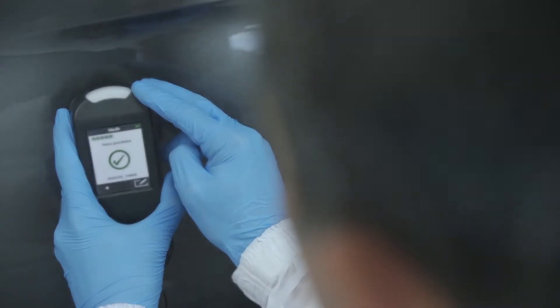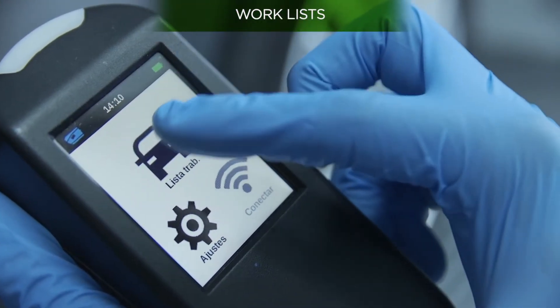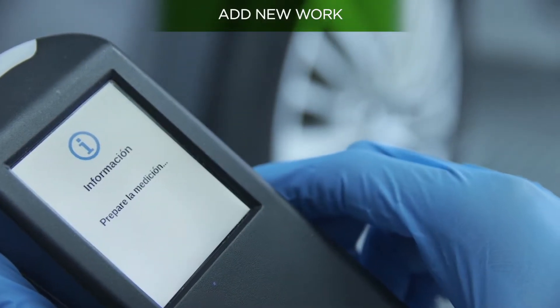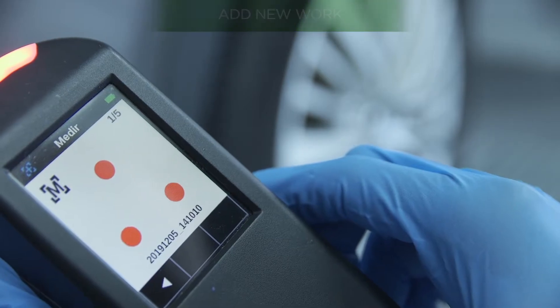First, in the main spectro screen, click on work lists and then add new work. This way the device will go into reading mode.